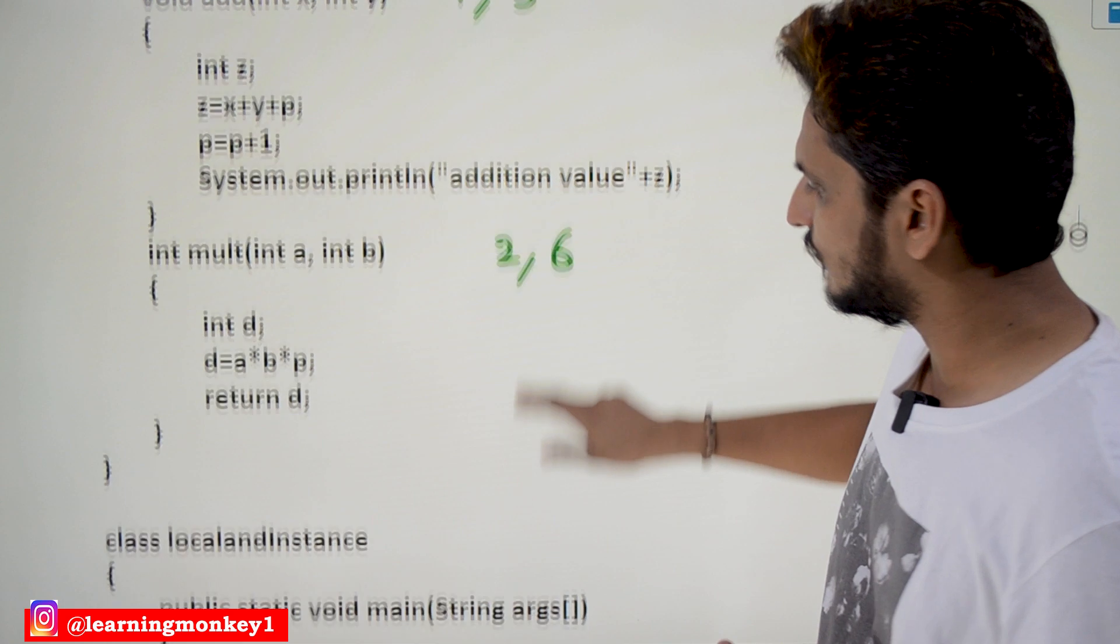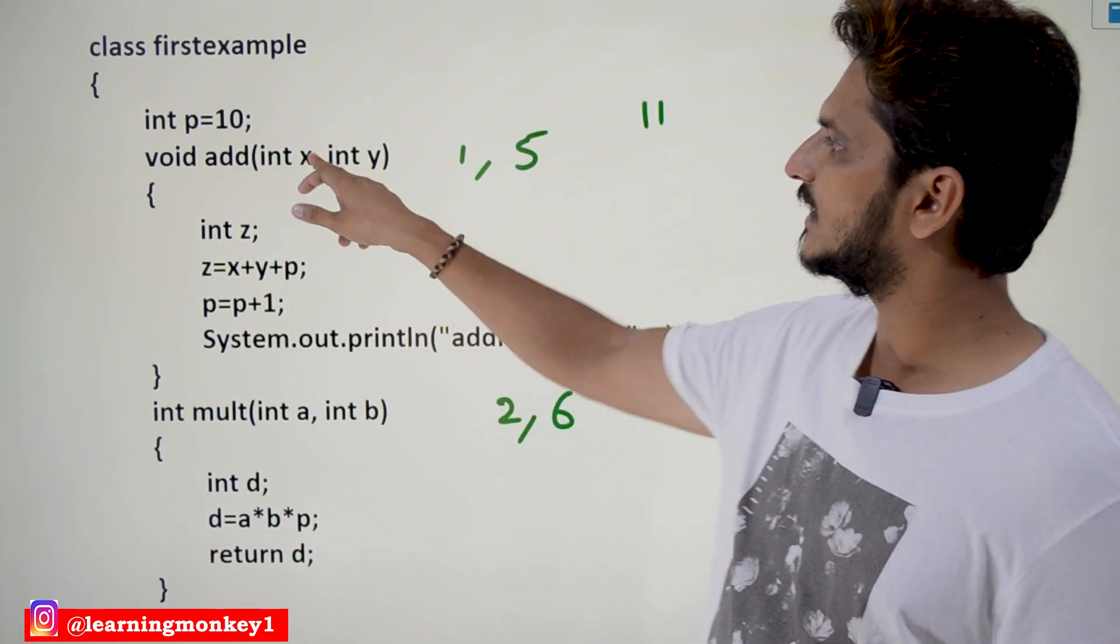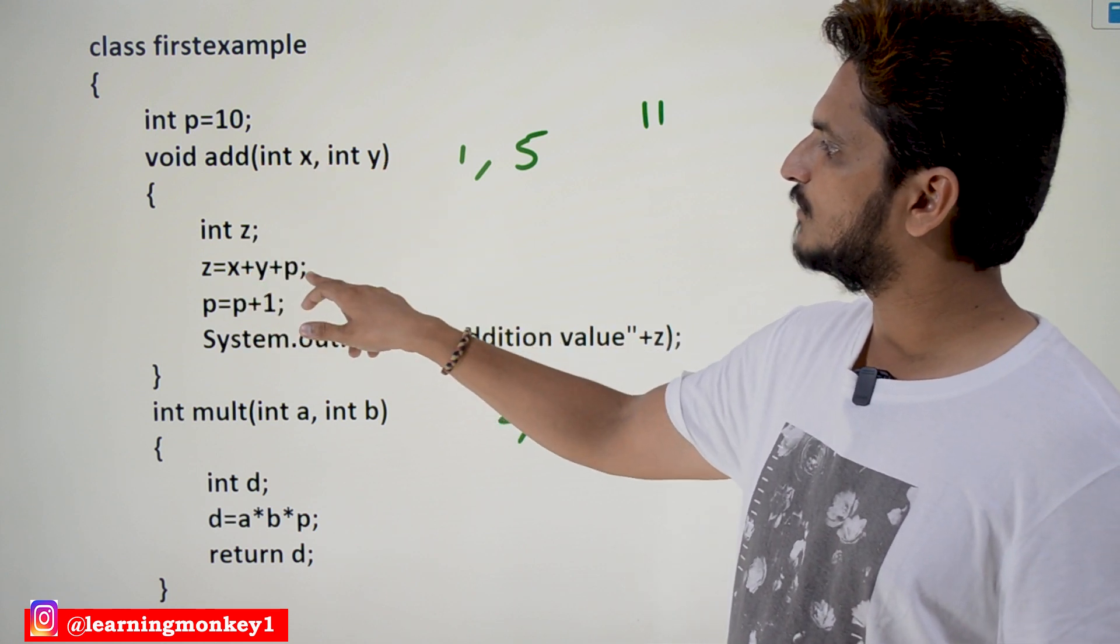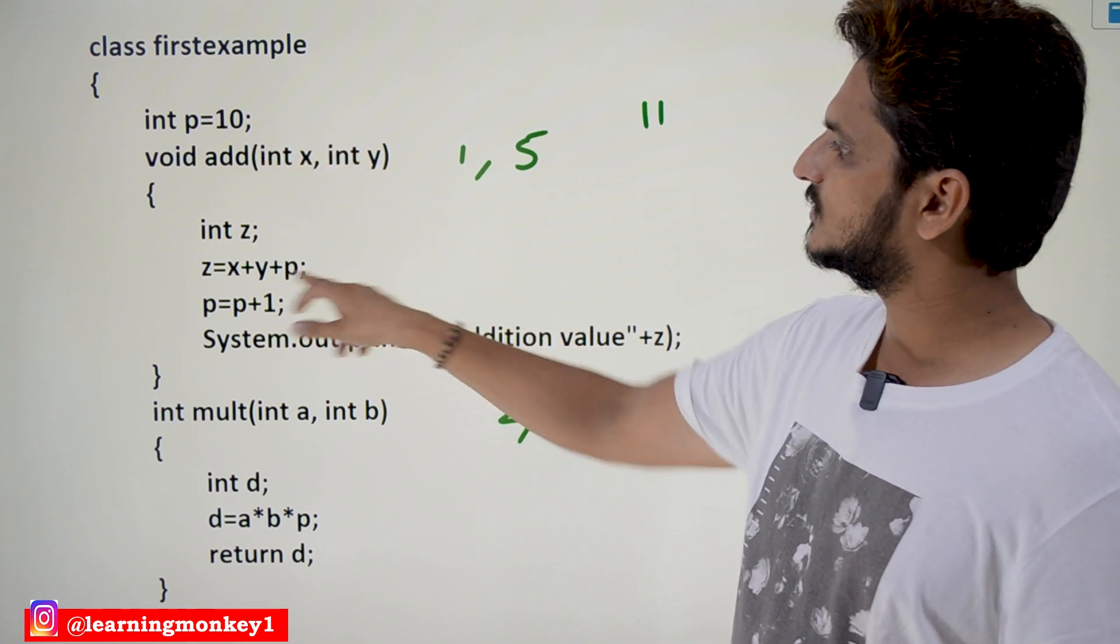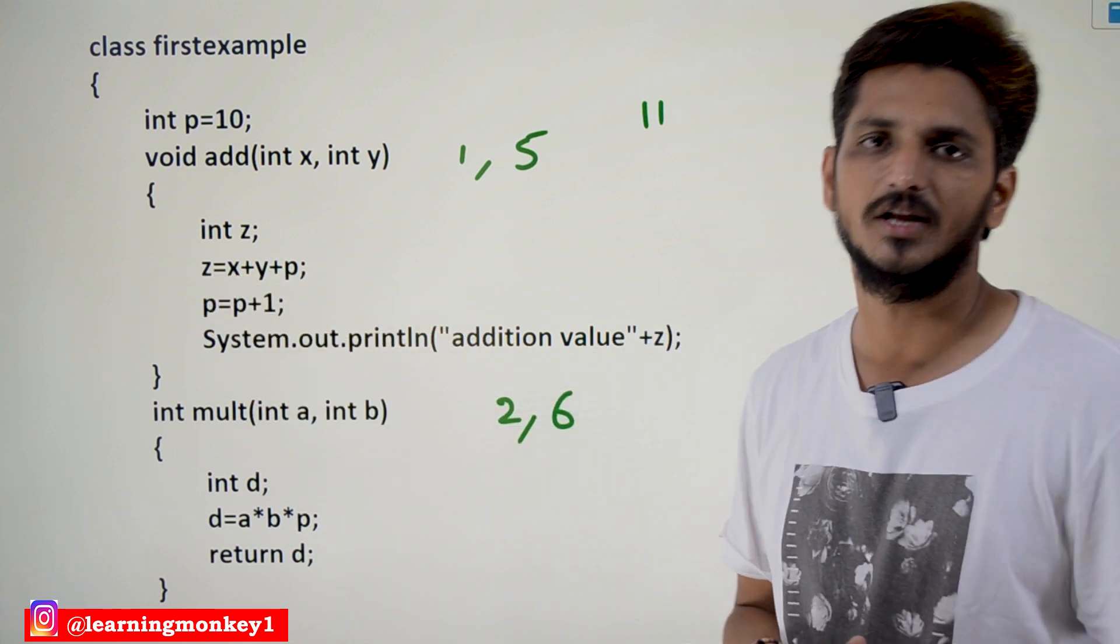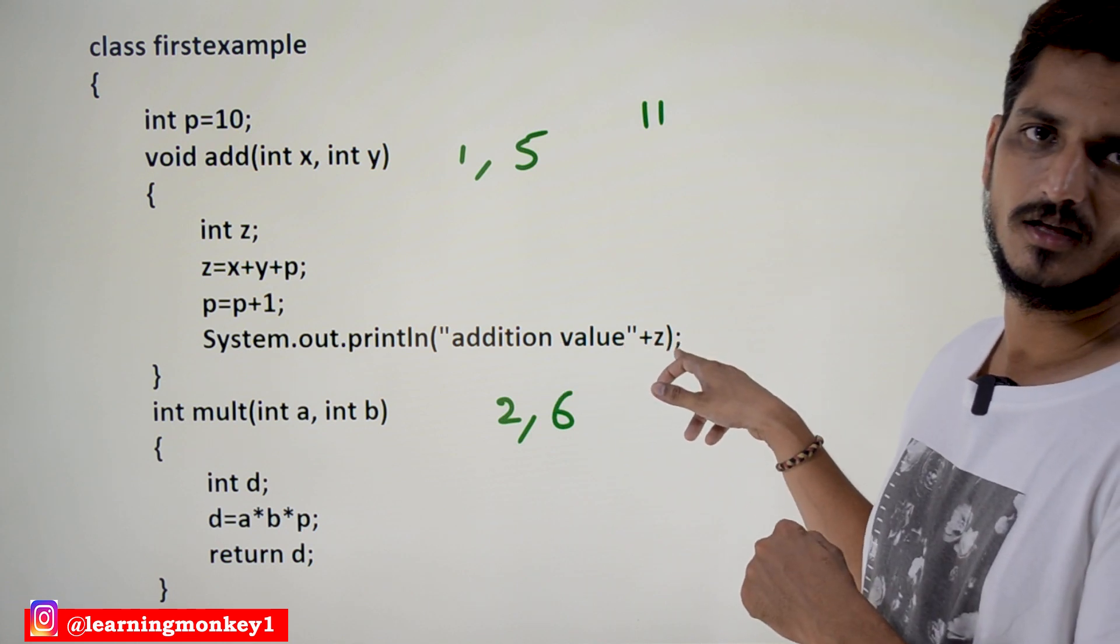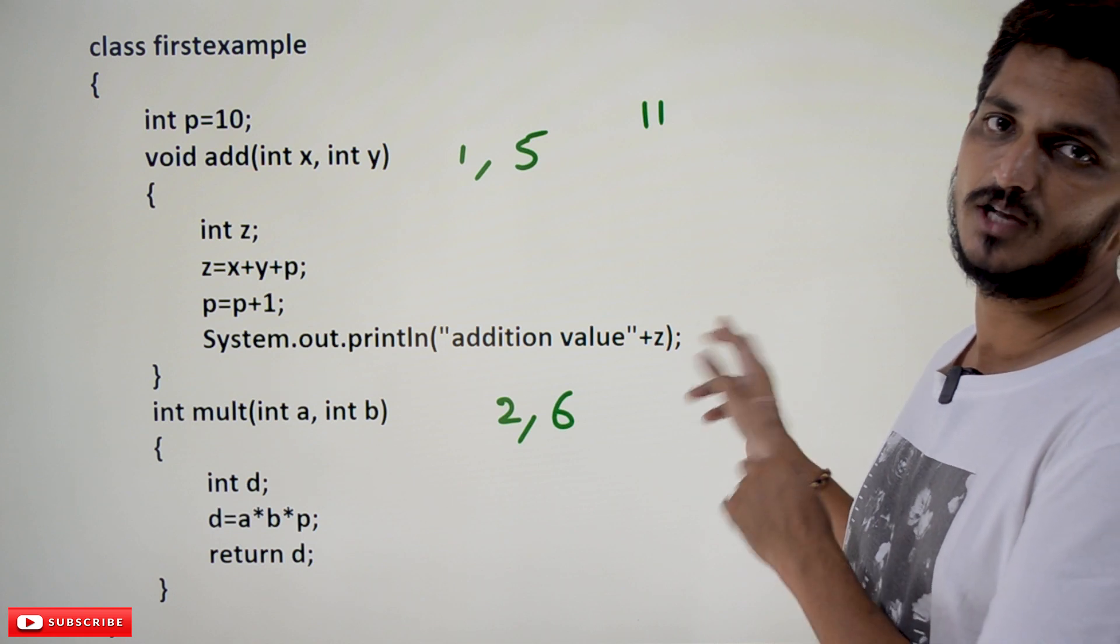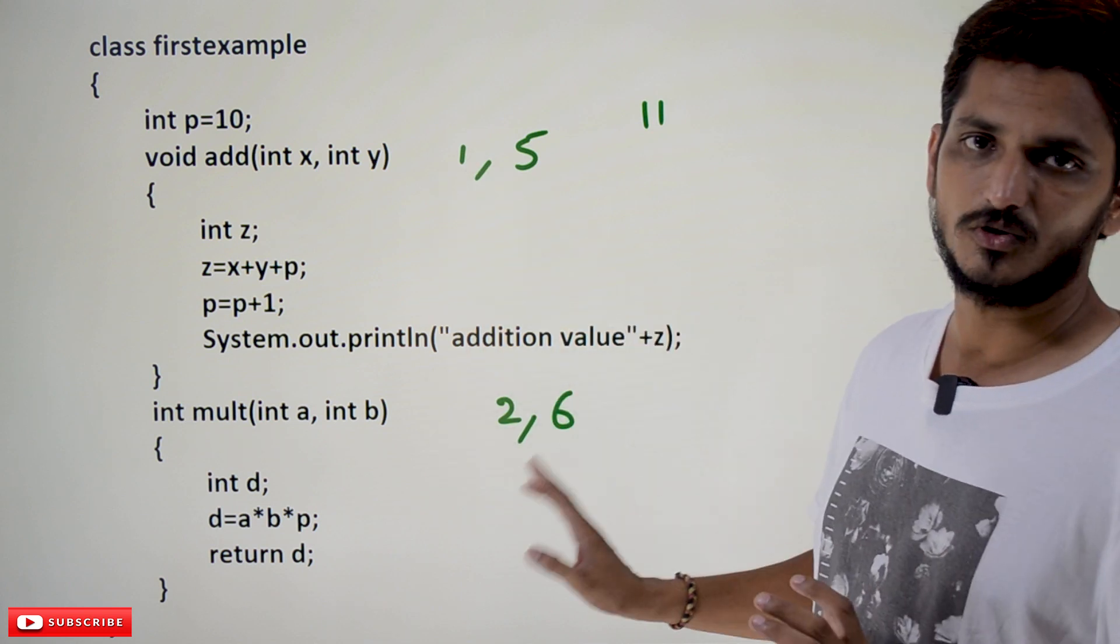Now coming to the execution, first thing we call the add method with values 1, 5. So, x contains 1, y contains 5. Int z, z is equal to x plus y plus p. What is the value of global variable, instance variable? 10. 1 plus 5 plus 10, 16. Now, z is having a value of 16. And we are displaying z value here. Addition value is z. Our output is addition value z, which is 16. Addition value 16 is one of the output. The first output we are going to get after executing this code.